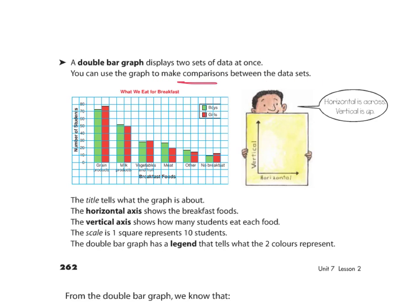A double bar graph is used when you're making comparisons between two different sets of data about the same information. So they're both about what they eat for breakfast. It's just two different groups, boys and girls.